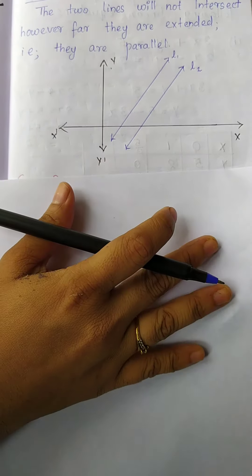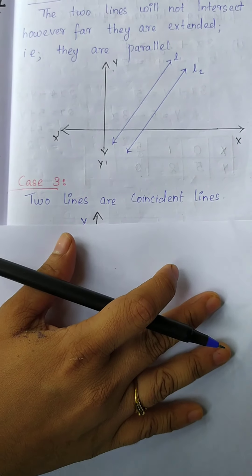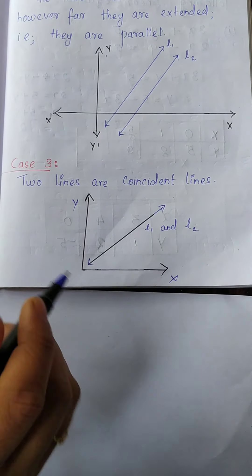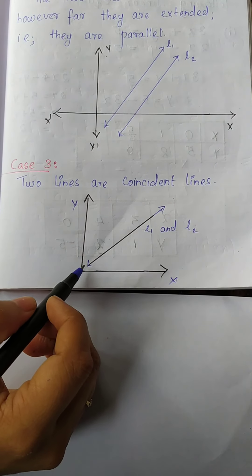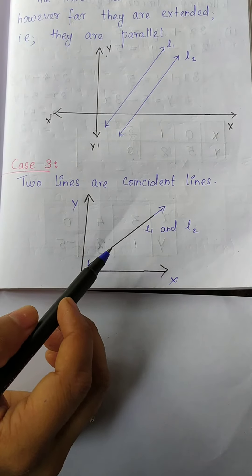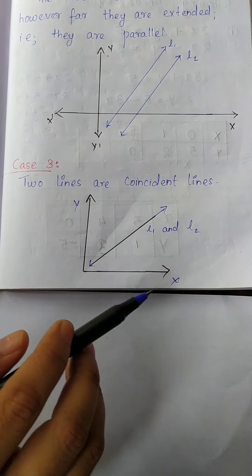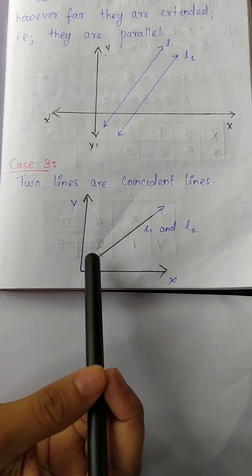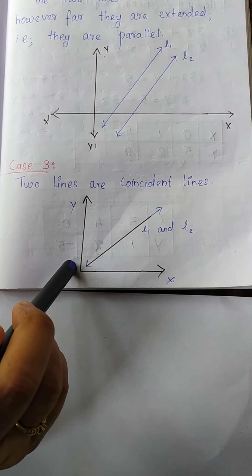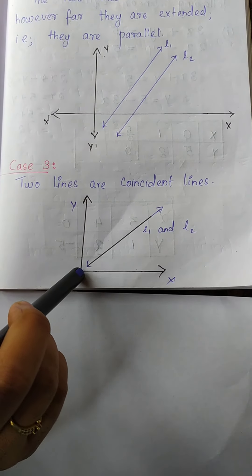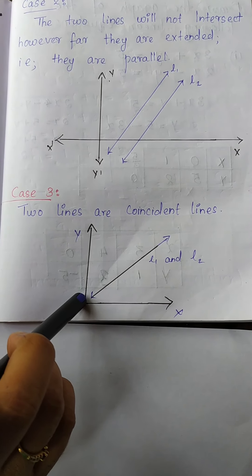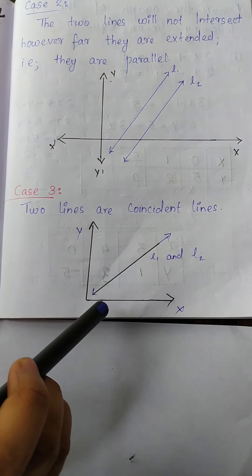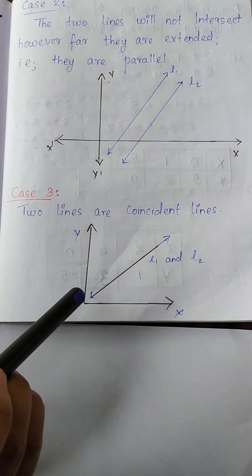Third case: the two lines are coincident lines, meaning L1 and L2 are the same line. When we equate the lines, we get a coincident line. In such a condition, the equation is consistent with infinitely many solutions. These are the three types of solutions for the graph.